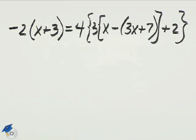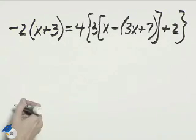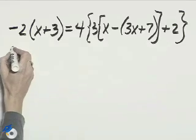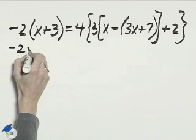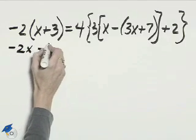To solve this equation, we first need to simplify a whole bunch of parentheses. On the left we'll say negative 2 times x is negative 2x, negative 2 times 3 is minus 6.